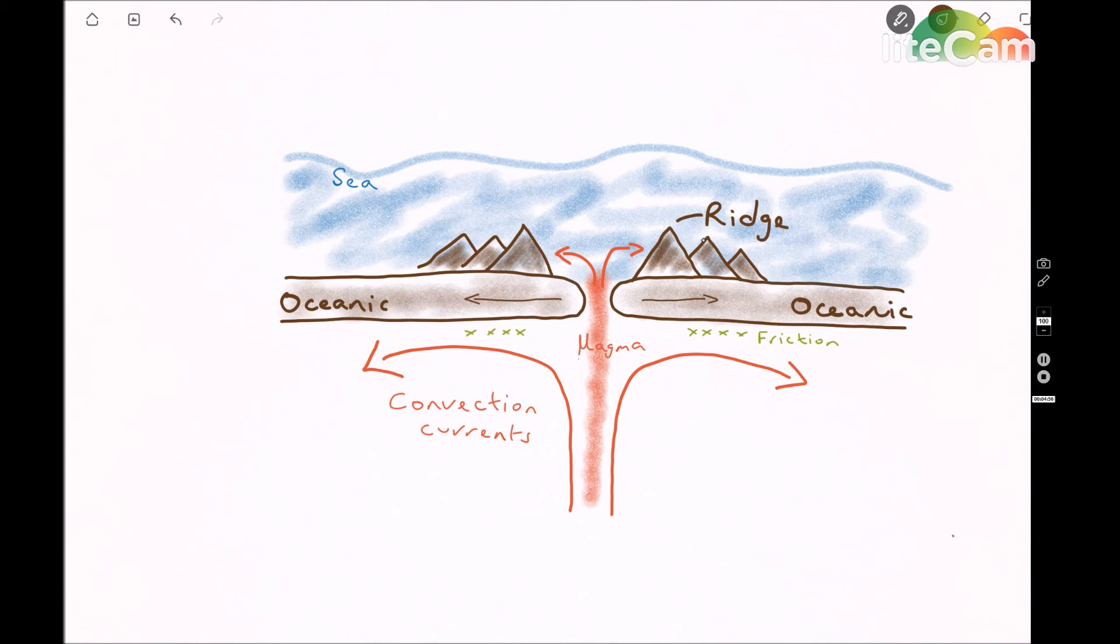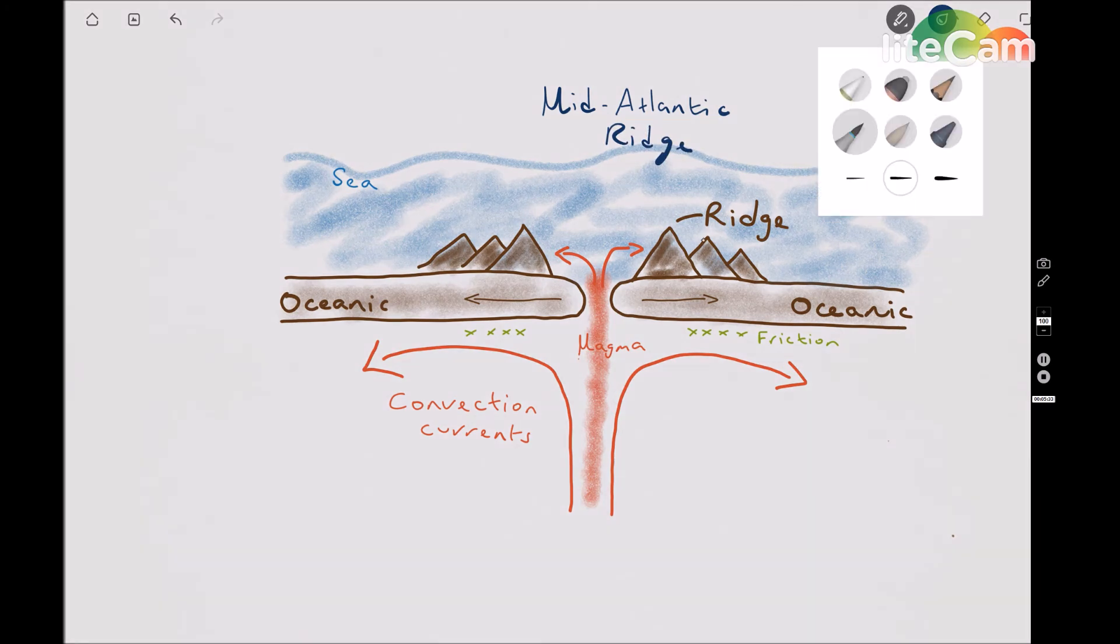they begin to form the most typical constructive plate boundary feature which we call ocean ridges. The most famous of the ocean ridges is the mid-Atlantic ridge, as you can see labelled on the diagram.